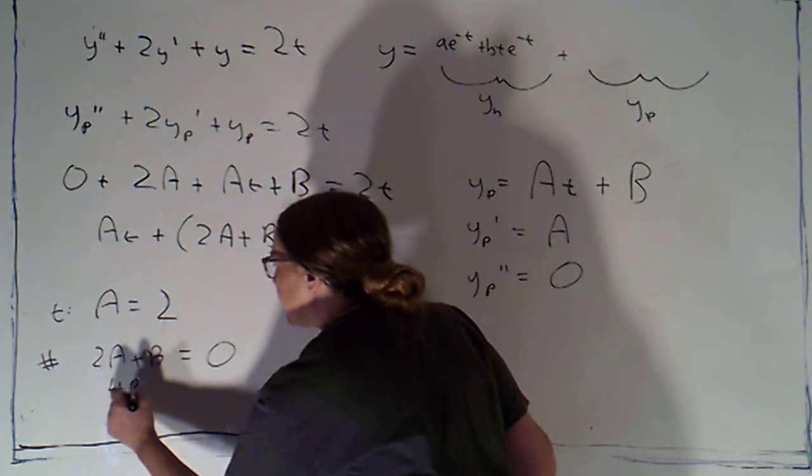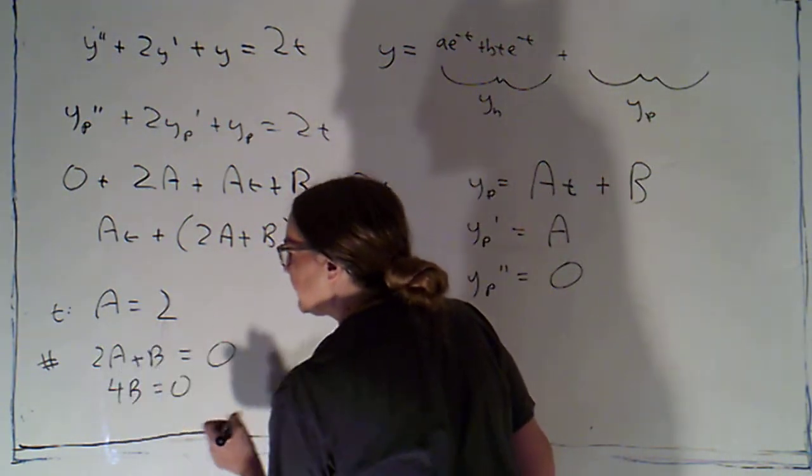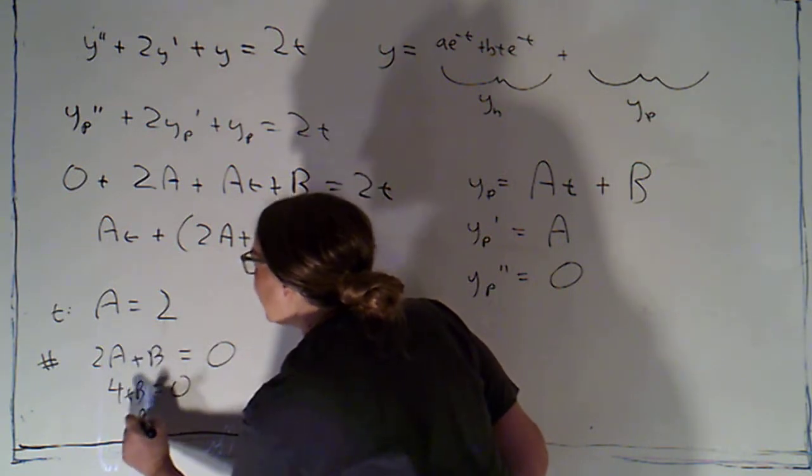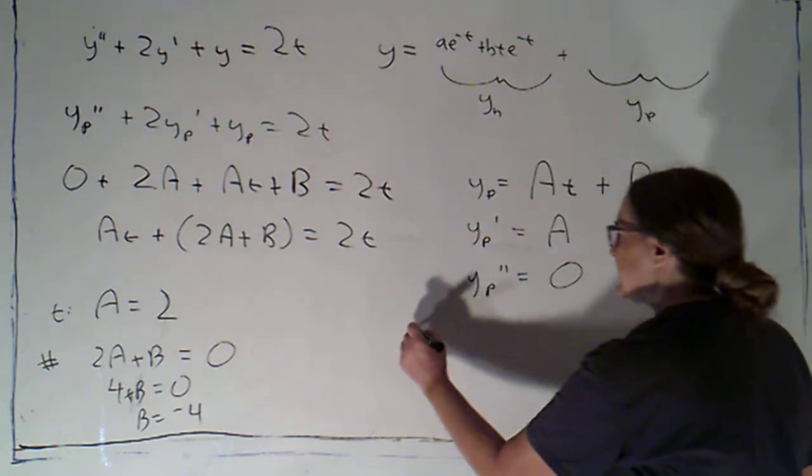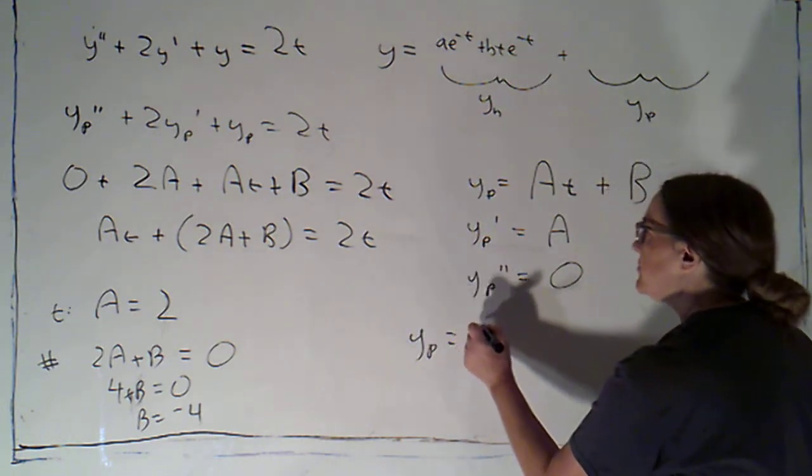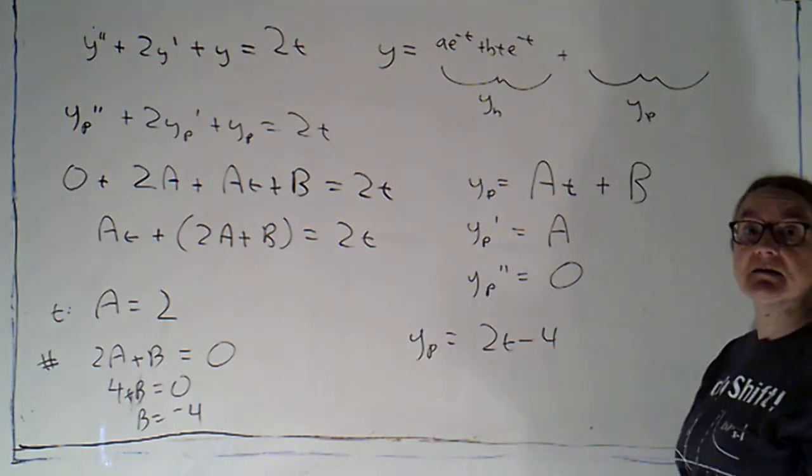So now 4 plus b has to equal zero. b is going to equal negative 4. So putting the pieces together, my particular solution is going to be 2t minus 4.